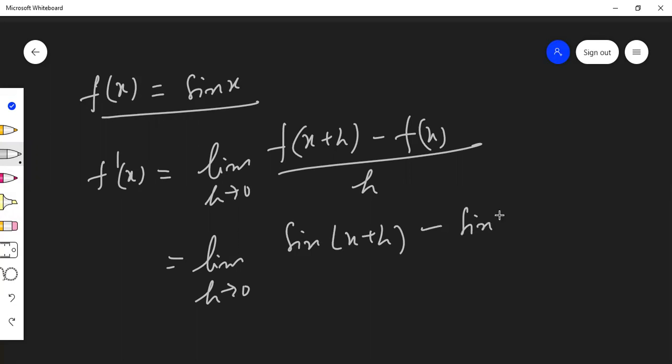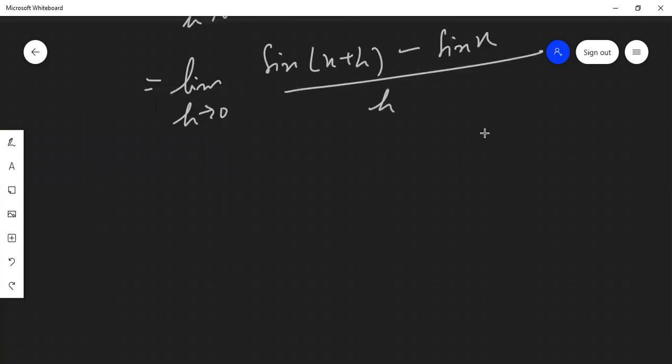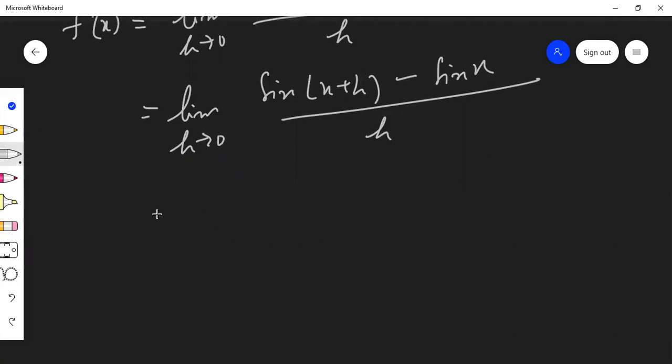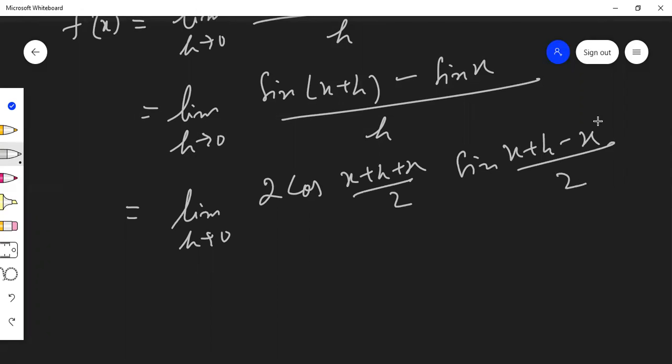Minus f(x), minus sin x divided by h. Sin C minus sin D is our identity. Limit h tends to 0. Sin C minus sin D is 2 cos (C plus D by 2). That is x plus h plus x by 2, and sin x plus h minus x by 2.